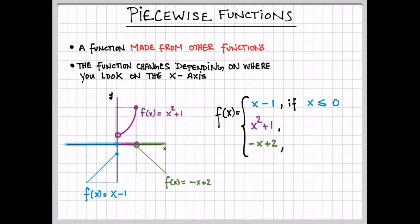Moving on to the purple graph, here we have to stay between zero and two. So x has to be less than two, but greater than zero. And finally, the green graph happens anywhere to the right of two. So here, x can be greater than two.